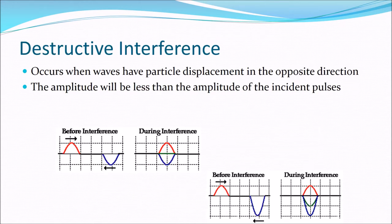Destructive interference is where two waves start to cancel each other out, but they will pass through each other as if nothing happened — the interference only changes what we are observing. For example, a red wave pulse with a positive amplitude and a blue wave pulse with an equal negative amplitude interfere so that we would see nothing; it would look like the waves had disappeared.